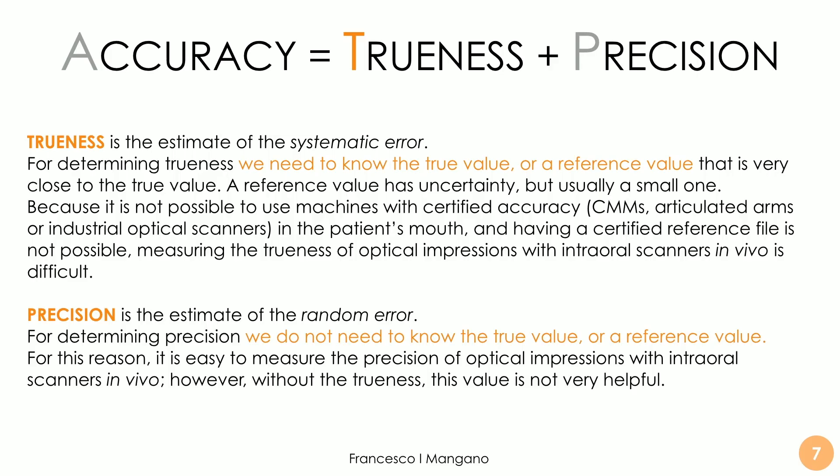We need to consider that accuracy is a sum of trueness plus precision. Trueness is the estimate of the systematic error, and we need a reference value — a true value — if you want to evaluate trueness. We need the true value, or a reference value that must be very close to the true value, because otherwise it's not possible to determine the trueness of a model — for example, a dentate model. A reference value has some uncertainty, but usually a very small one, so it can be considered a reference for us.